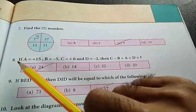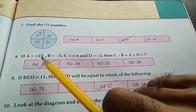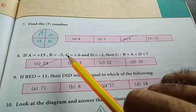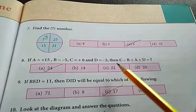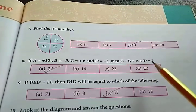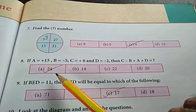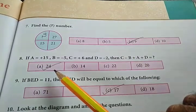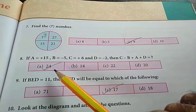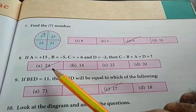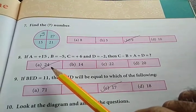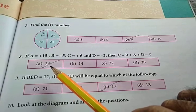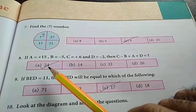Then question number 8, if A is equal to +15, B is equal to -5, C is equal to +6 and D is equal to -2, then C - B + A + D is equal to - answer will be 24. Use the BODMAS rule: bracket, of, division, multiplication, addition and subtraction. If you follow this rule, your answer will be 24.